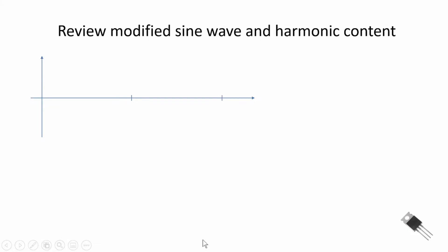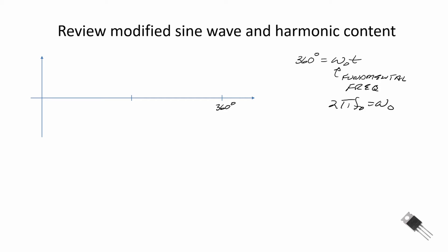Now let's review the modified sine wave introduced in previous videos. Recall we plot this on a conduction angle of one cycle, so 360 degrees is our conduction angle, and we can map that 360 degrees into omega-naught t, where omega-naught is our fundamental frequency. Note that 2 pi f-naught equals omega-naught. Our modified sine wave, assuming we used an H-bridge, was off for a conduction angle of alpha degrees.